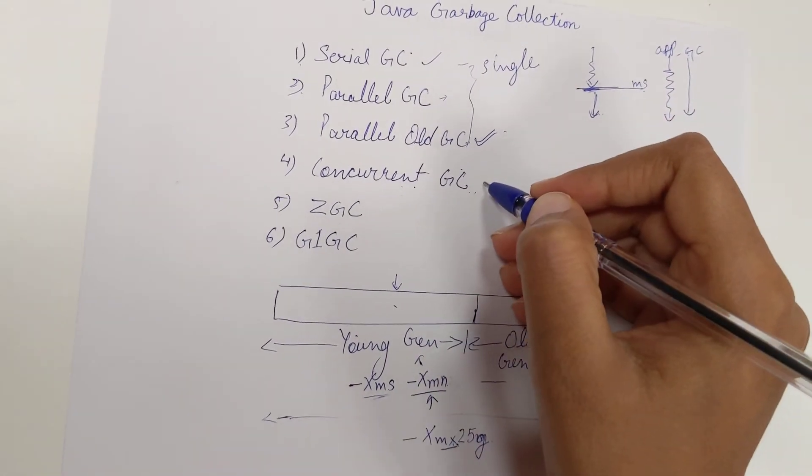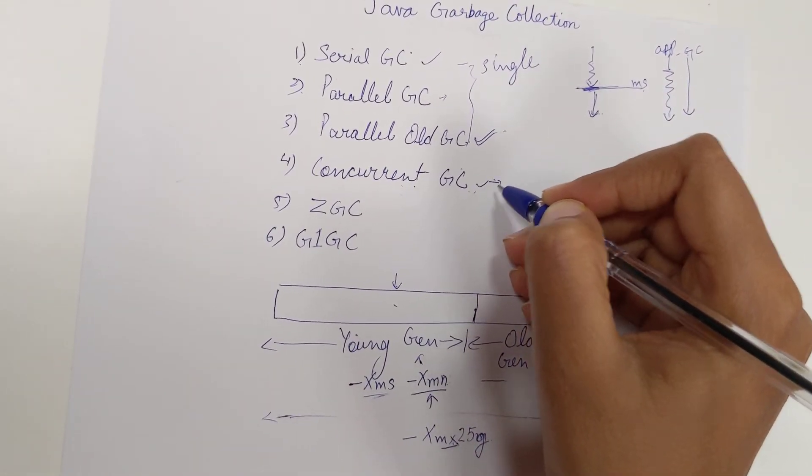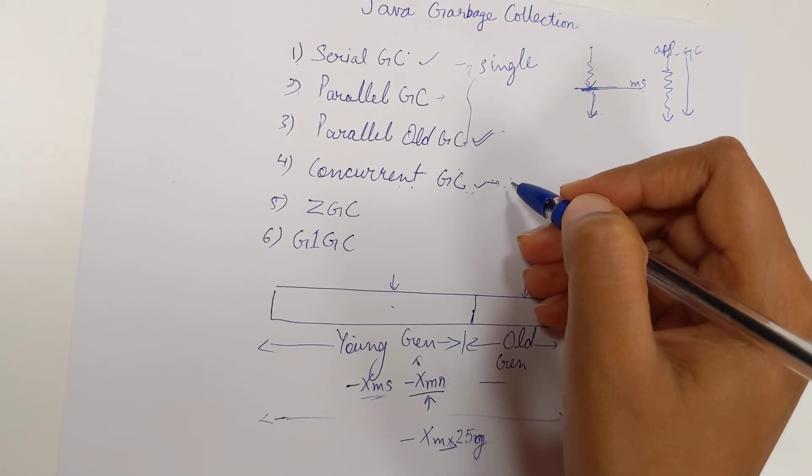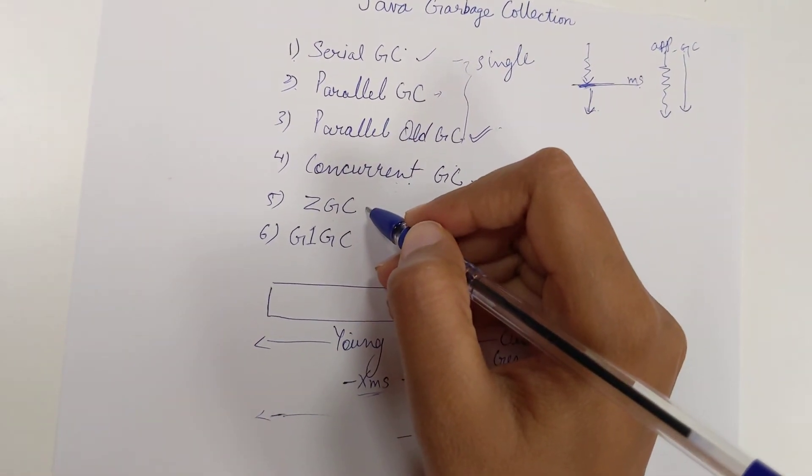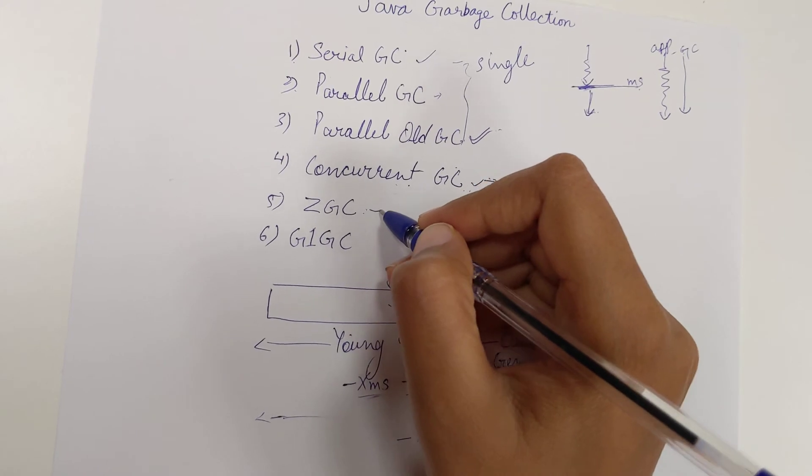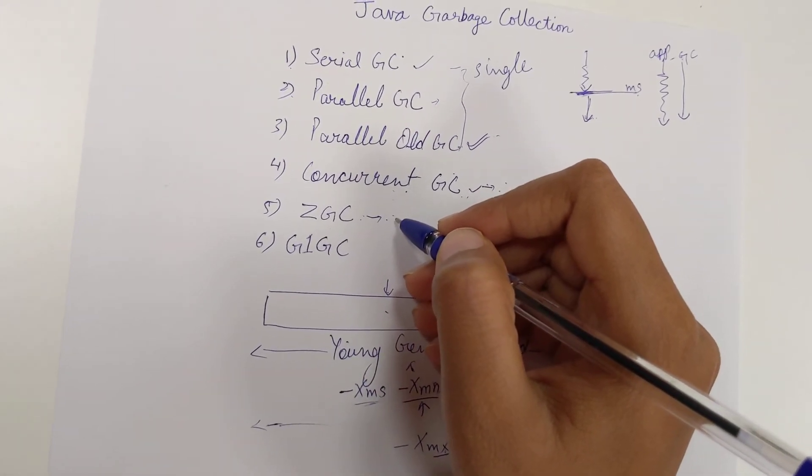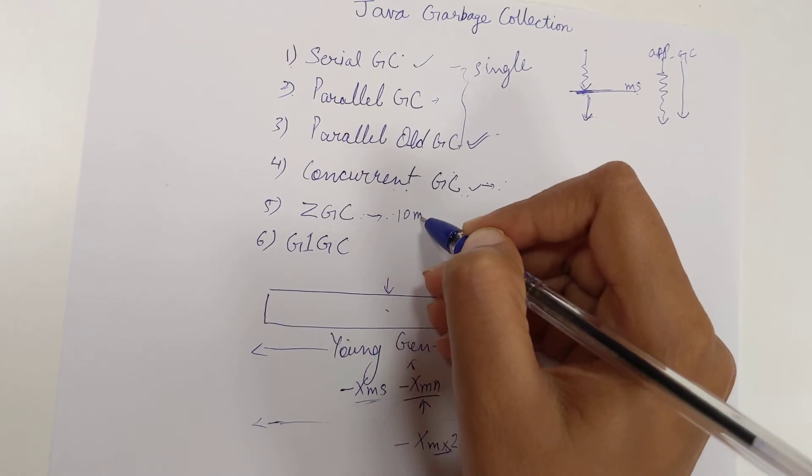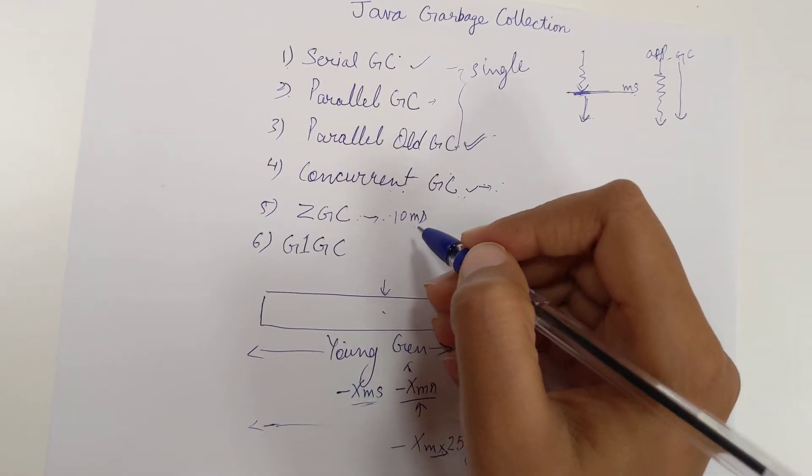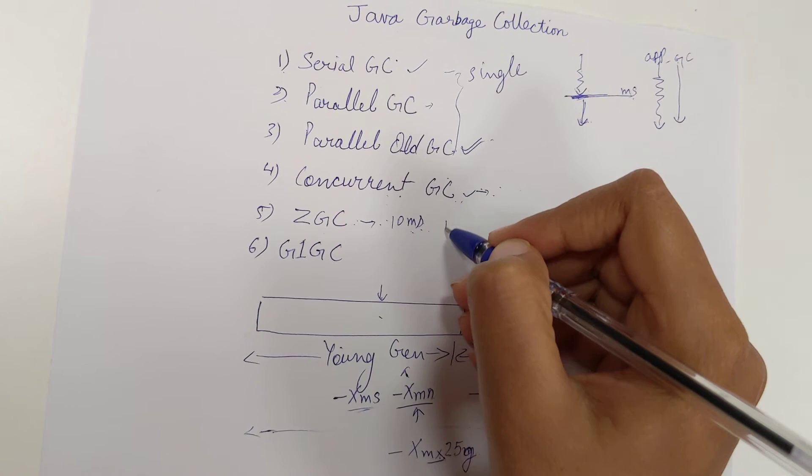Concurrent GC currently has not much performance, so it has been deprecated. ZGC is a new concept which is scalable and low pause time garbage collection with 10 milliseconds of pause time. This is newly implemented and is coming as part of JDK 11.